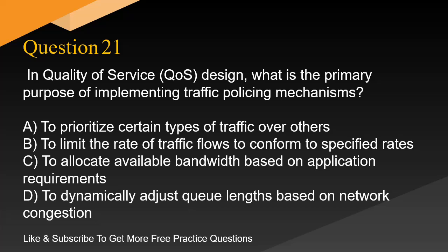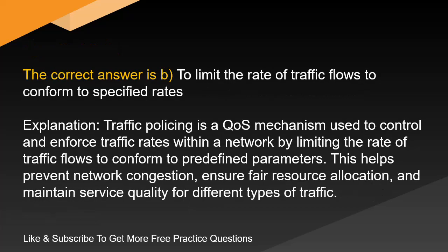Question 21. In quality-of-service, QoS, design, what is the primary purpose of implementing traffic policing mechanisms? A. To prioritize certain types of traffic over others. B. To limit the rate of traffic flows to conform to specified rates. C. To allocate available bandwidth based on application requirements. D. To dynamically adjust queue lengths based on network congestion. The correct answer is B: to limit the rate of traffic flows to conform to specified rates. Traffic policing is a QoS mechanism used to control and enforce traffic rates within a network by limiting the rate of traffic flows to conform to predefined parameters. This helps prevent network congestion, ensure fair resource allocation, and maintain service quality for different types of traffic.